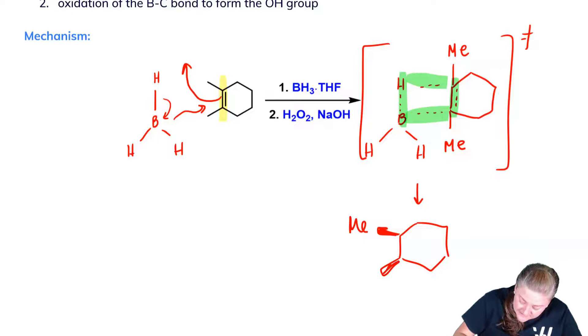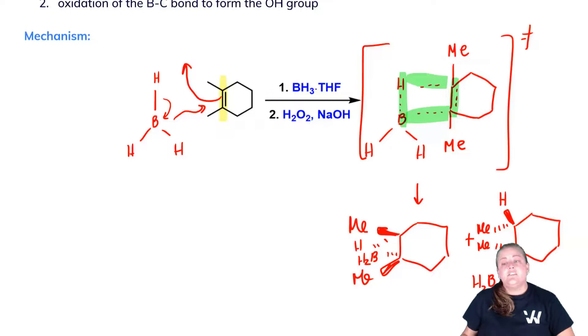We should draw both products here because while the addition is syn, we get it to either face with equal preference. Remember, sp2 hybridized carbons can have addition to either side with equal preference. Alternatively, I could have the methyls here and the hydrogen and BH2 here. Keep in mind that we have syn addition to either the top face or bottom face with equal preference.